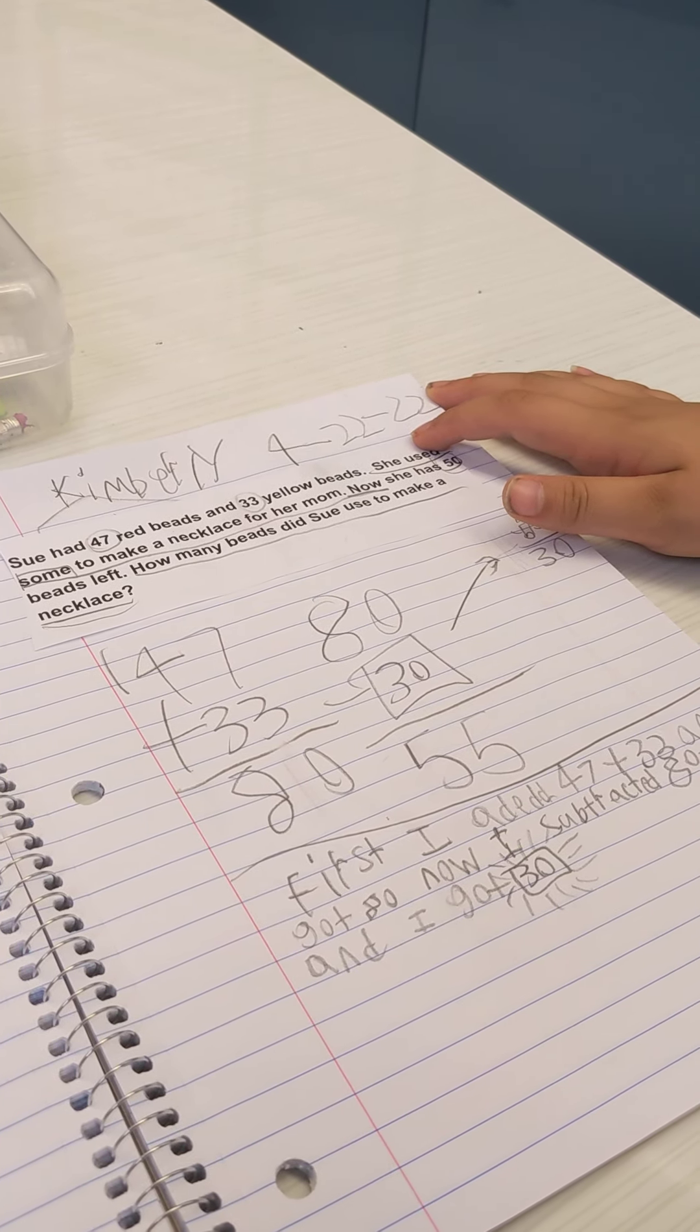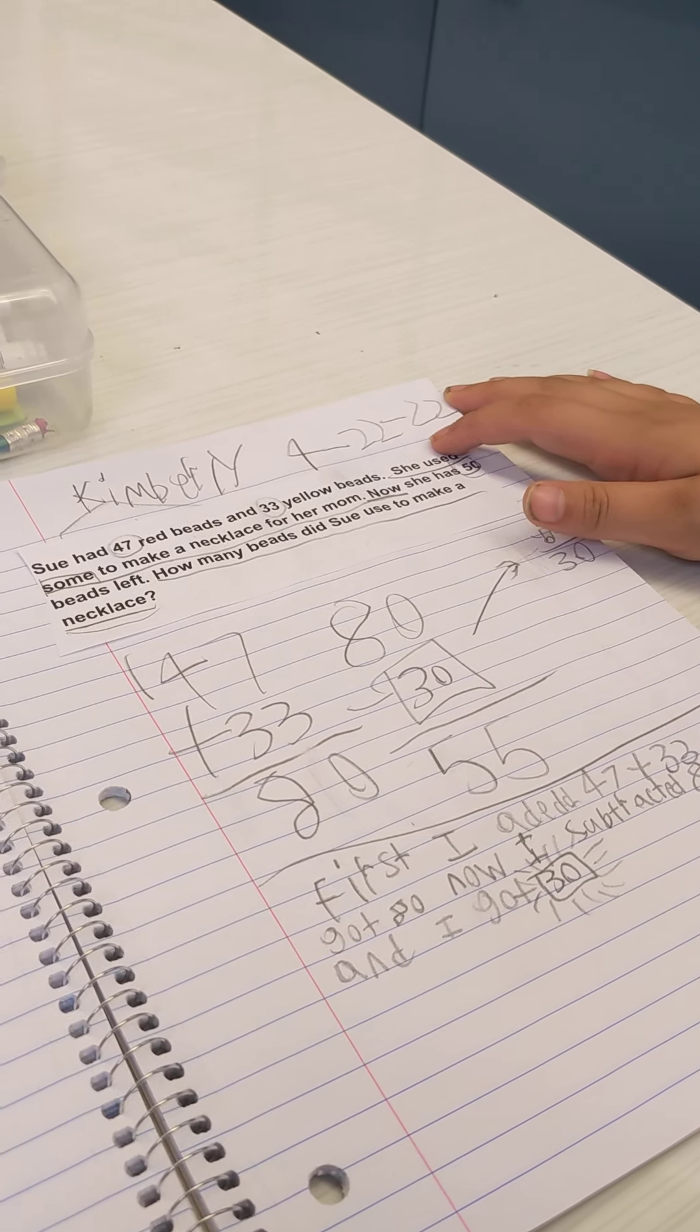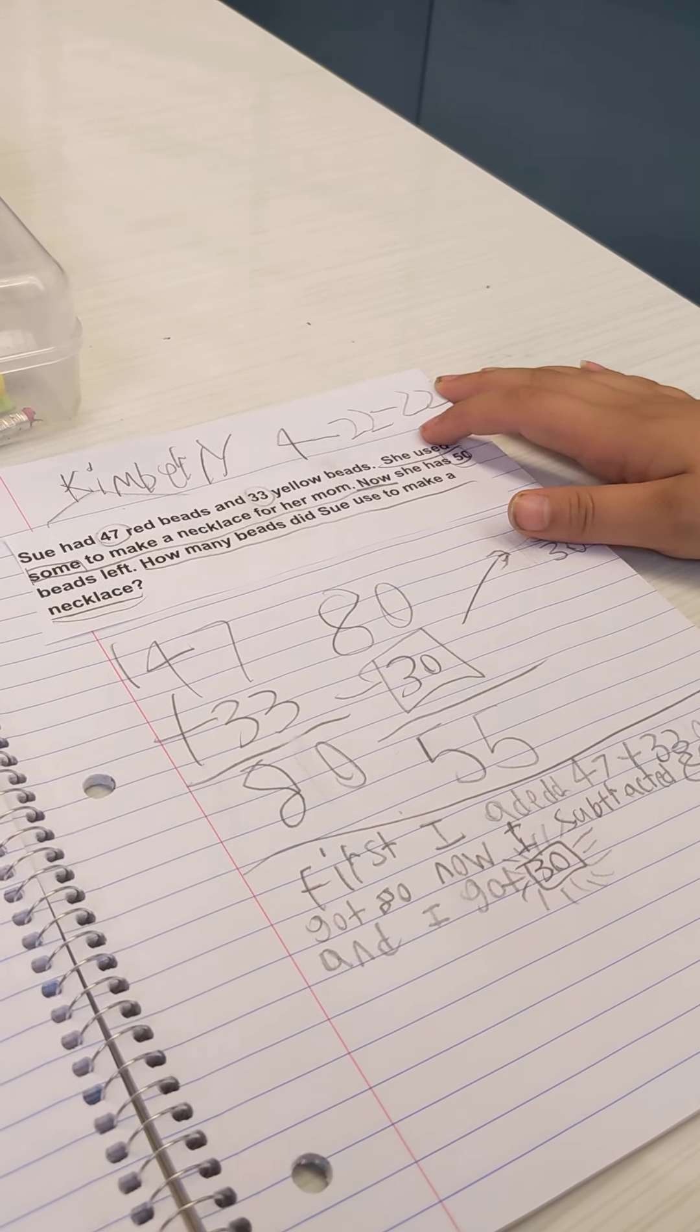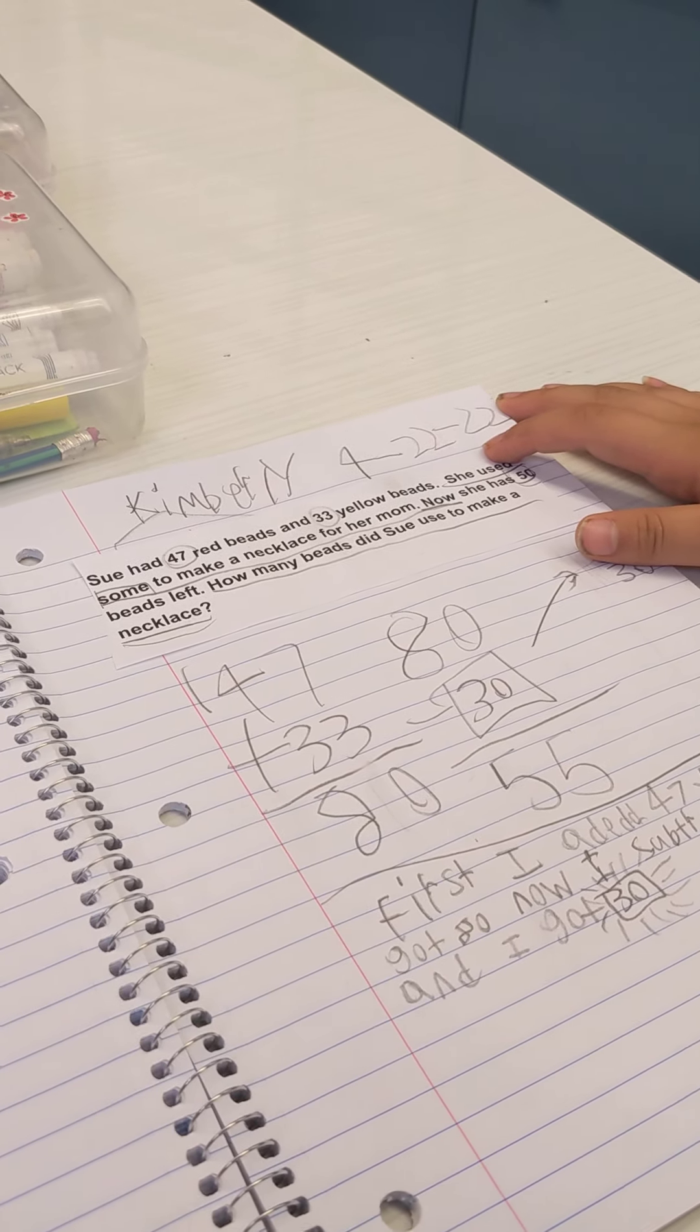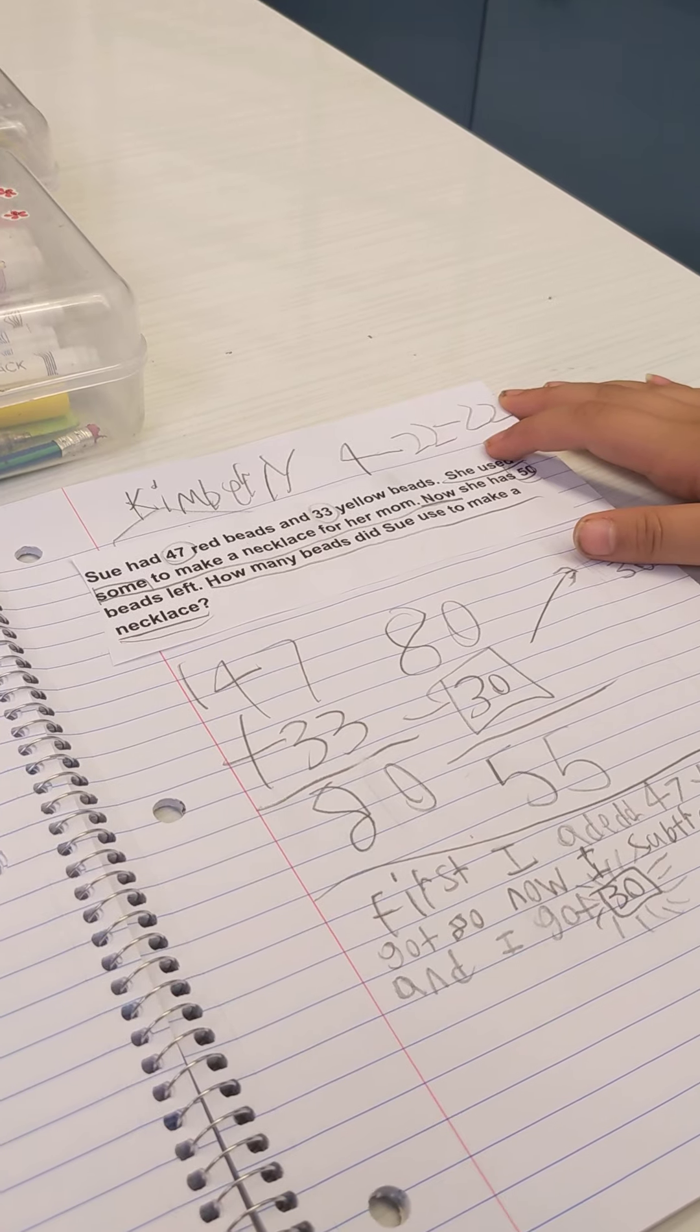Like how many beads do I have to start with, or in this case how many beads did Sue have? Does that make sense? How do I know how many beads Sue has?